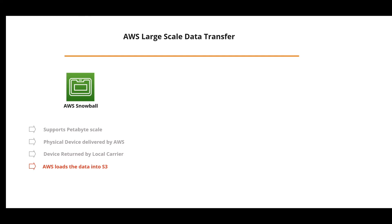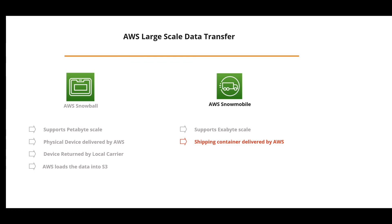If you have more than petabyte-scale data, there is AWS Snowmobile, designed for exabyte-scale data transfer. AWS provides a shipping container delivered to your location, and AWS personnel set up the connection to your network. You load your data into the Snowmobile container, and AWS loads it into S3 when the container arrives at their location. If one trip isn't sufficient, they will do multiple trips.